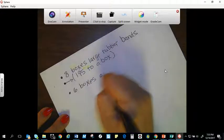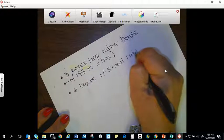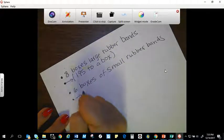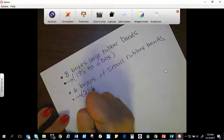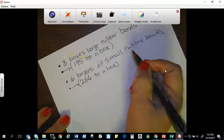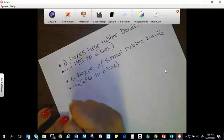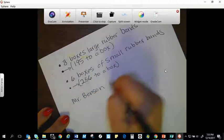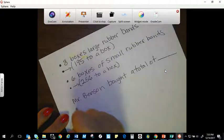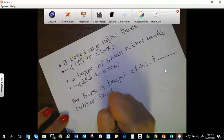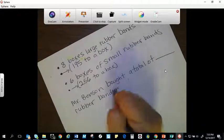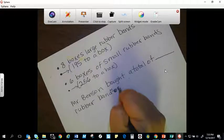So six boxes of small rubber bands. And these come, well, let me draw my arrow, 256 to a box. What is the total number of rubber bands that Mr. Benson bought? So I'm going to rephrase that too. Mr. Benson bought a total of blank rubber bands. Oops. I meant to write an F there, and it came up as an E. There we go.